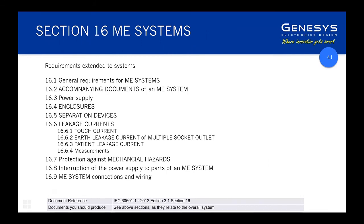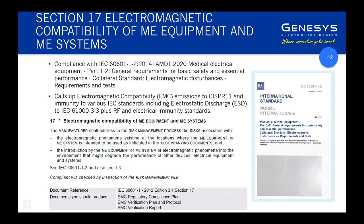Section 16 on systems essentially extends the concept from equipment to systems — where you've got more than one piece of equipment interconnected. There are some additional considerations, but the general scope of requirements is similar.